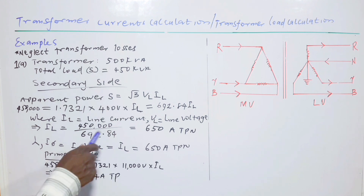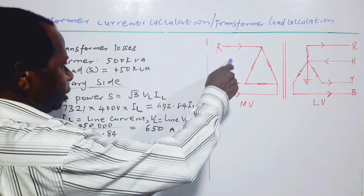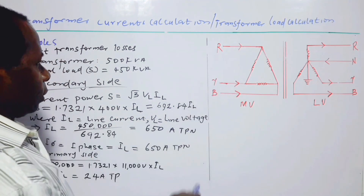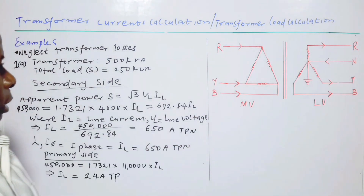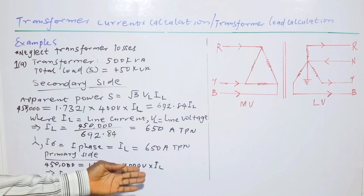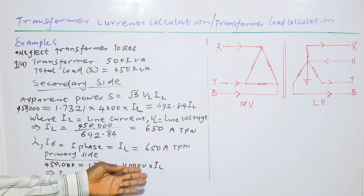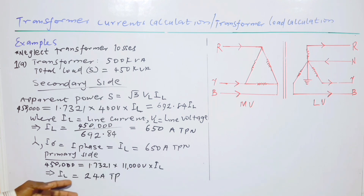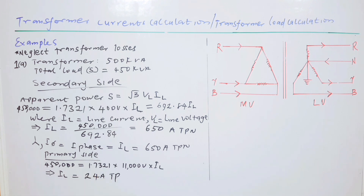We now come to the primary side. On the primary side the line voltage is 11 kV, that is 11,000 V. We substitute into the same formula and the line current I_line equals 24 amperes, three-phase.